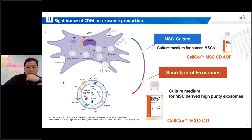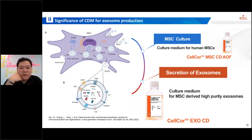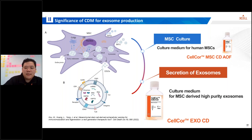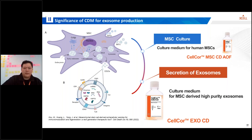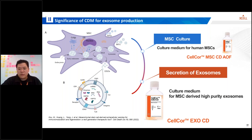In stem cell cultures, cell growth is a critical metric. We have already successfully launched a serum-free, chemically defined medium for mesenchymal stem cells — we call it Celcar MSC CDAOF, the animal origin free version. Many companies are utilizing our Celcar MSC CDAOF to free themselves from the limitations of impurities and cell overgrowth, which has been one of the weakest points in the cell and gene therapy field. Researchers in the EV field are also choosing Celcar MSC CDAOF to reduce various quality control costs.